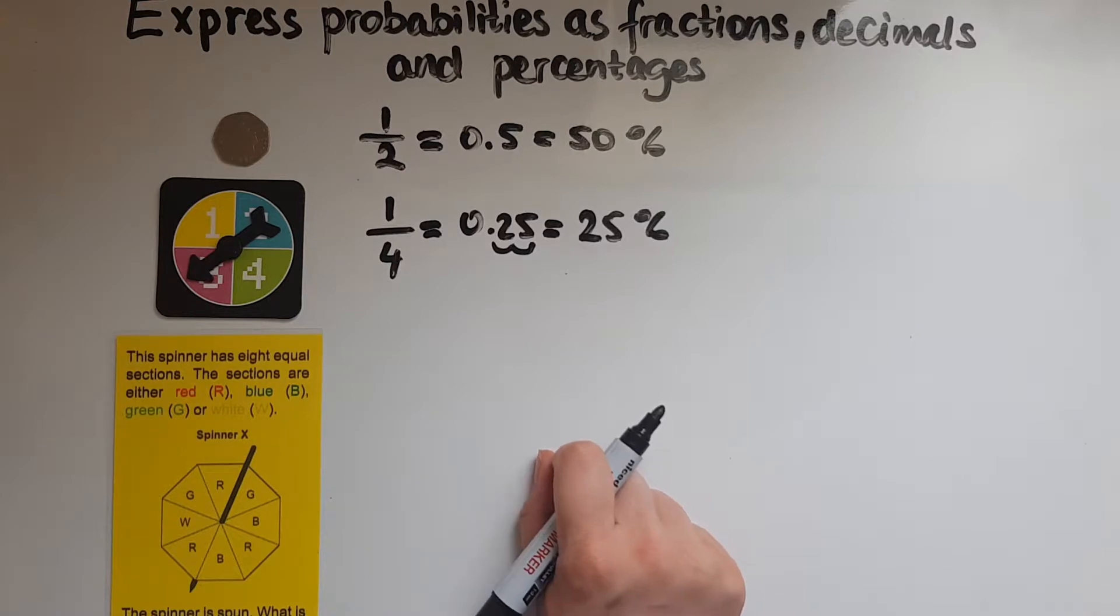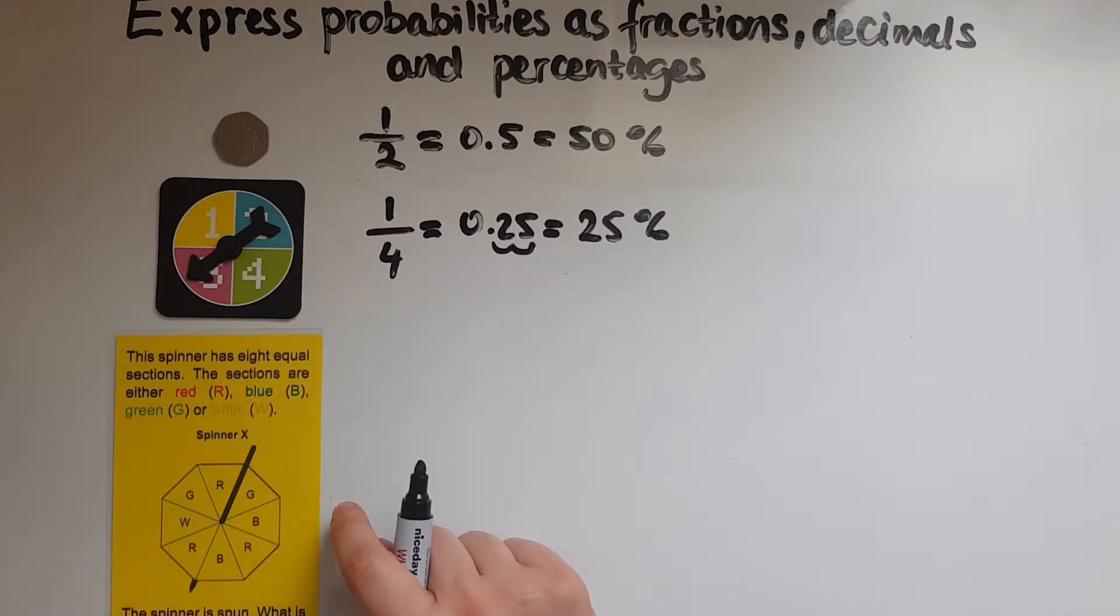And finally we've got the spinner which has eight equal sections. The sections are either red, blue, green or white. I want to work out the probability of getting red. So there is a red here, here and there. So there are three reds.